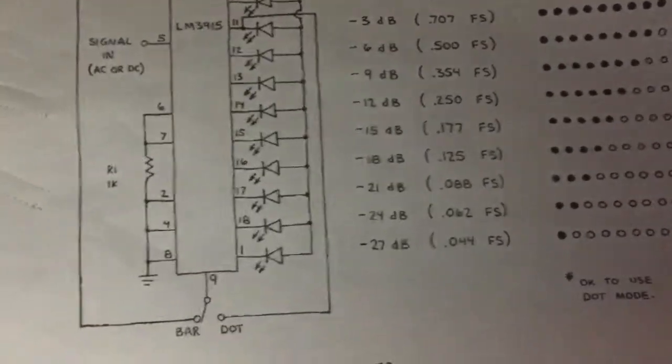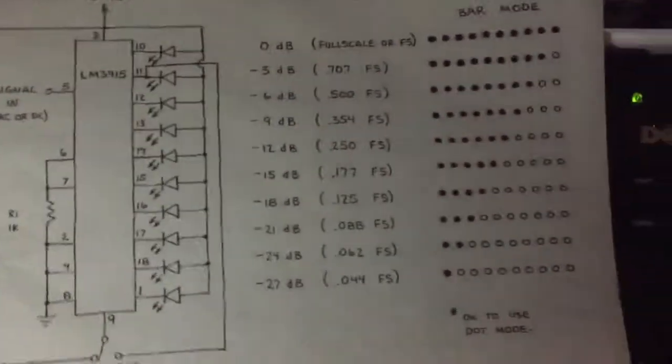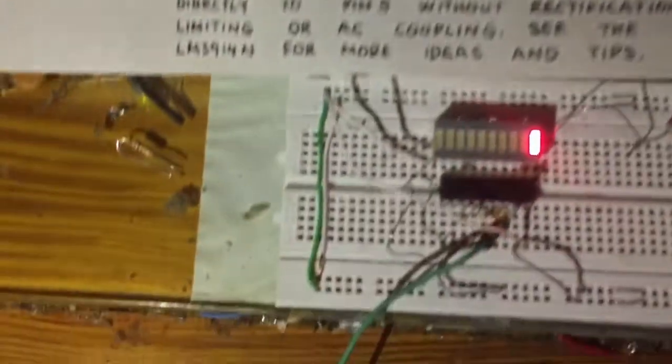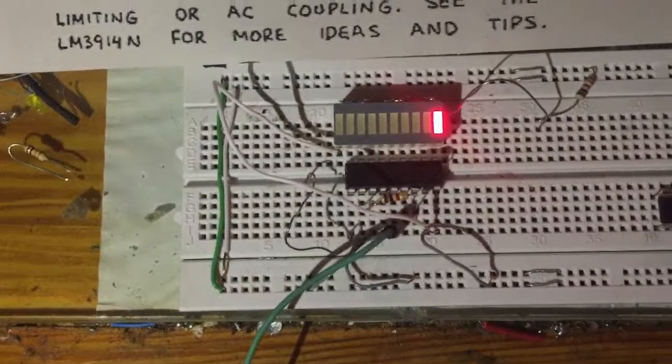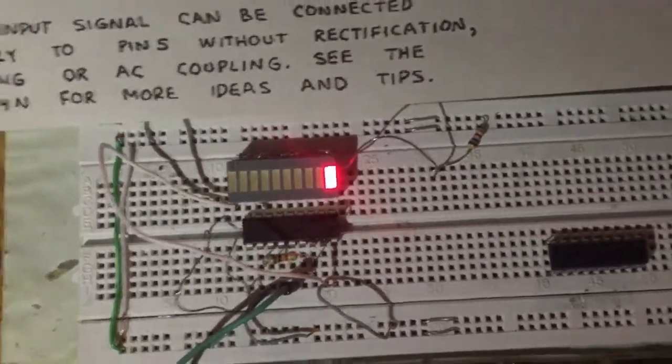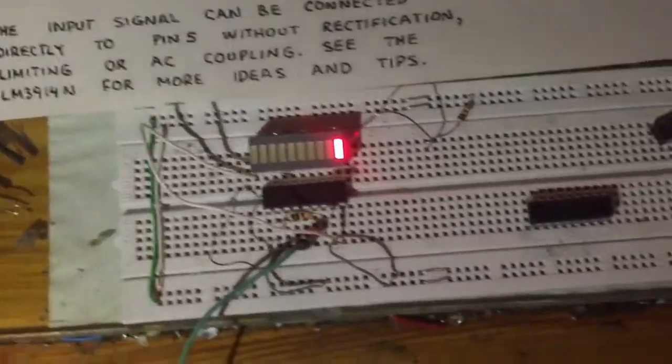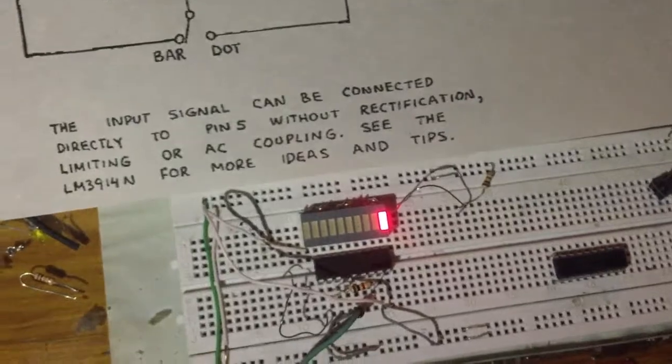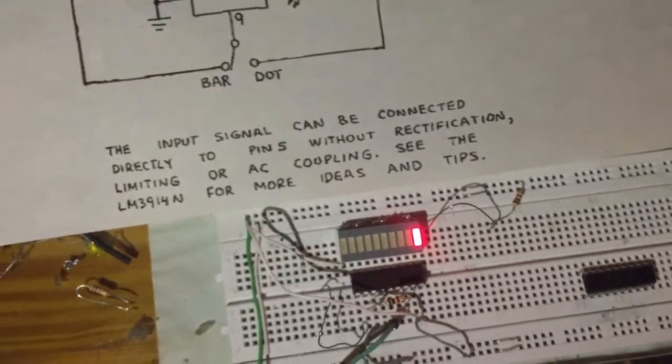As you can see here, the bar graph is connected to the positive and the LM3915 will drive the negative.